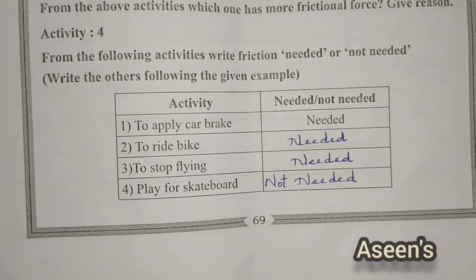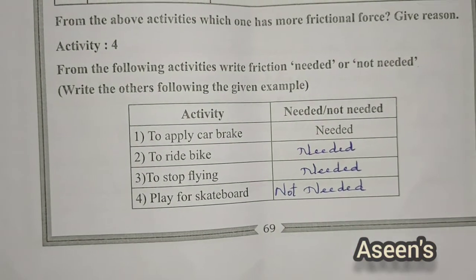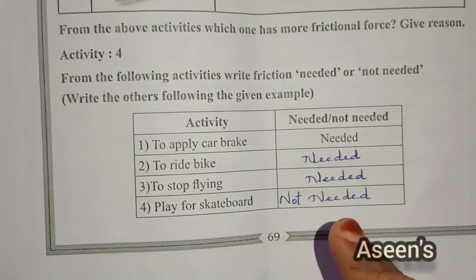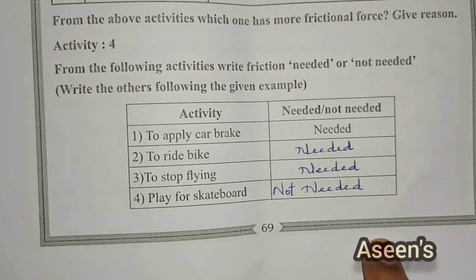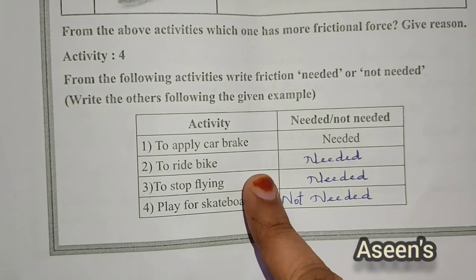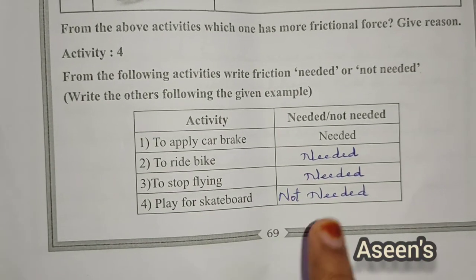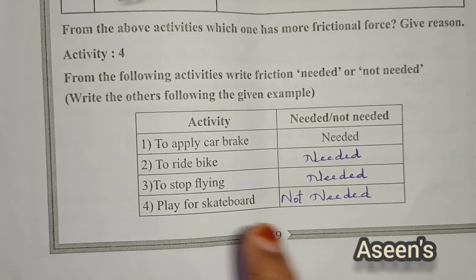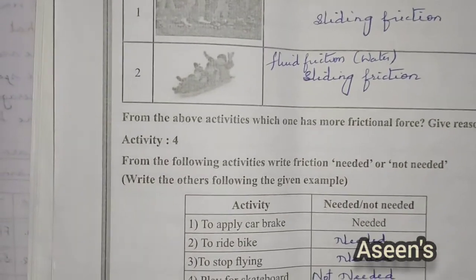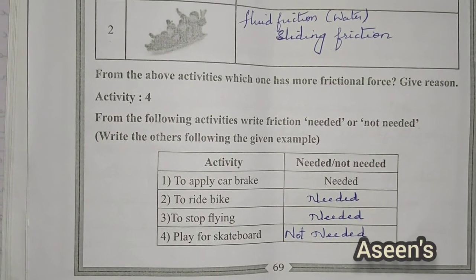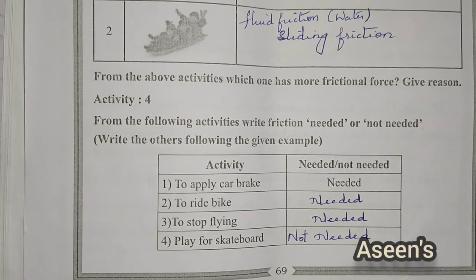Activity 4 is the last activity in the chapter. From the following activities, write whether friction is needed or not needed. To apply brakes — needed. To ride a bike — needed. To stop flying — needed. To play on a skateboard — not needed. That's a grammatical mistake in the sheet but the answer is clear. Learning Sheets 4 and 5 are now complete. If you find this video helpful, please like, share, and subscribe to the channel. Thank you for watching.